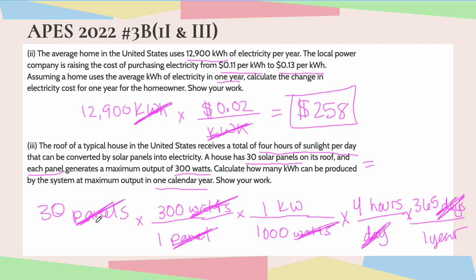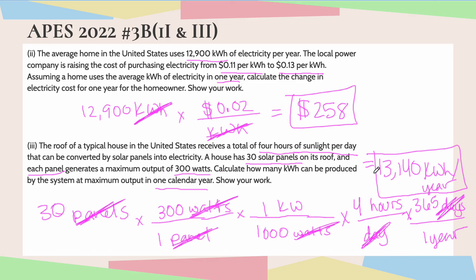Now plugging all of this into the calculator: 30 times 300 times 4 times 365, then dividing by 1,000 — I got 13,140 kilowatt hours per year. That's how many kilowatt hours can be produced by the system at maximum output in one calendar year.